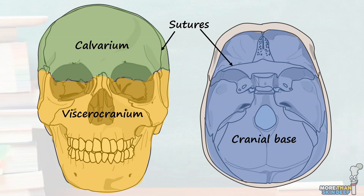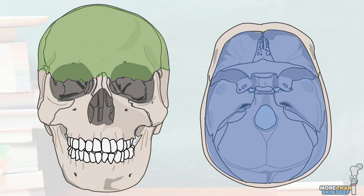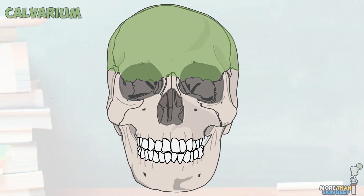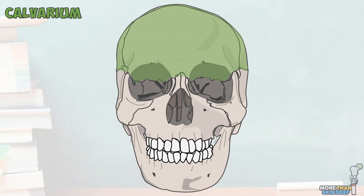Today we're going to learn a bit about each of the bones of the skull and how they relate to the functions this complex structure must permit. My name's Connor and welcome to Anatomy 101. Let's start by looking at the bones of the neurocranium. The domed roof of the neurocranium is known as the calvarium and is composed of four bones.